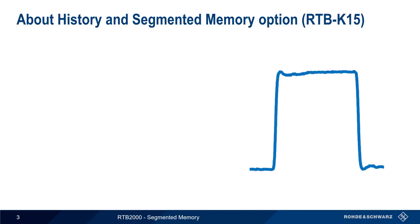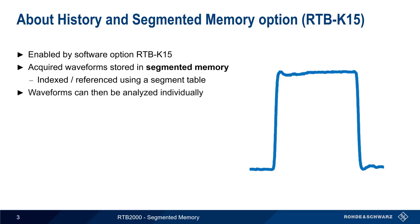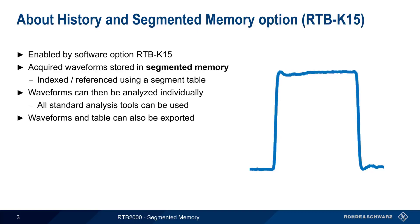Let's start with a high-level overview of history and segmented memory, which is enabled by the RTB K15 software option. This option allows acquired waveforms to be stored in so-called segmented memory. A segment table is used to index or reference these stored segments, and the stored waveforms can then be individually analyzed using all of the standard analysis tools available on the RTB. These waveforms and the associated table can also be exported for offline analysis or documentation, with both the waveforms and the table files in standard CSV format.